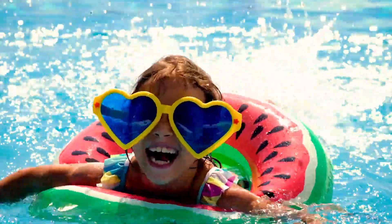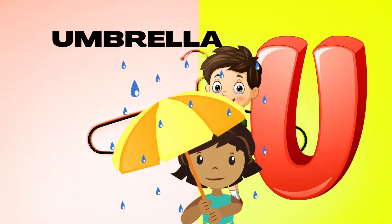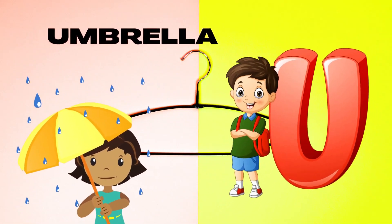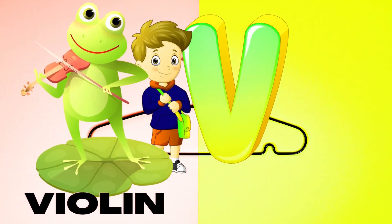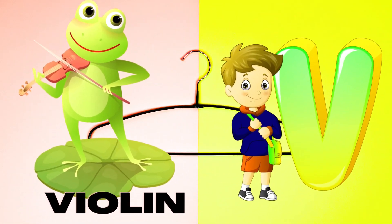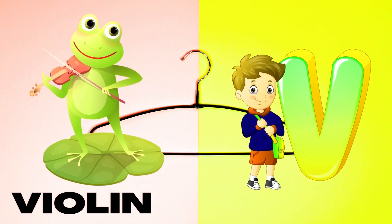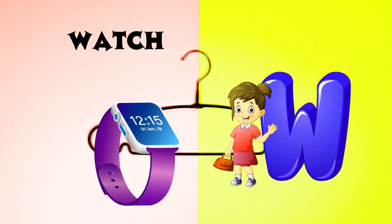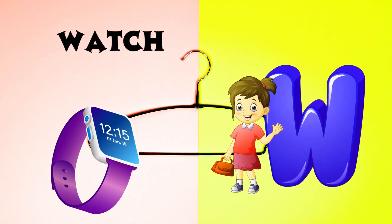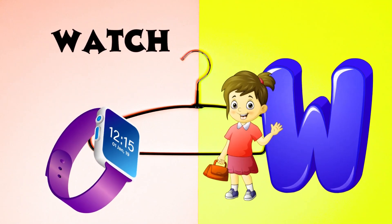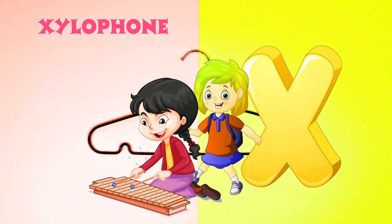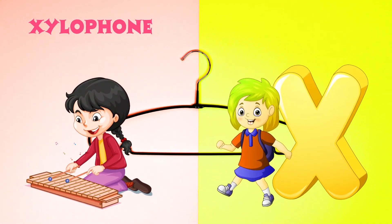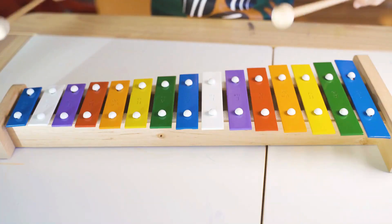U is for Umbrella, U-U-Umbrella. V is for Violin, V-V-Violin. W is for Watch, W-W-Watch. X is for Xylophone, X-X-Xylophone.